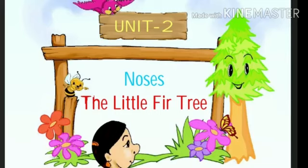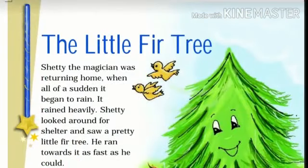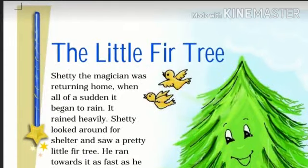Hello everyone, today we are going to learn unit 2, chapter 4: The Little Fir Tree. Fir, F-I-R, fir — R is silent, so you have to speak 'fir'. First, I will read a few lines and give you an explanation of this chapter.